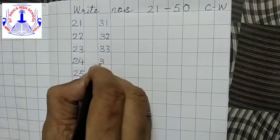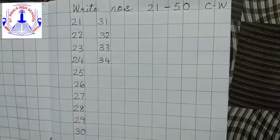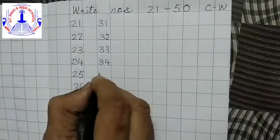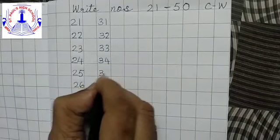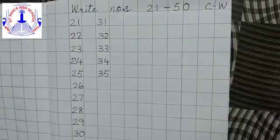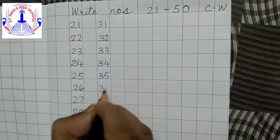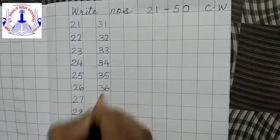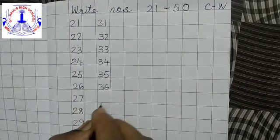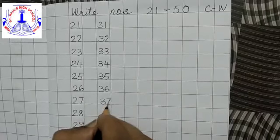3 and 4, 34. 3 and 5, 35. 3 and 6, 36. 3 and 7, 37.